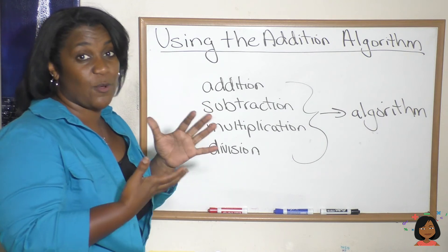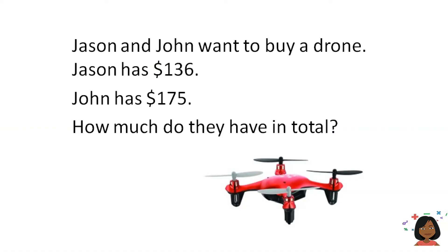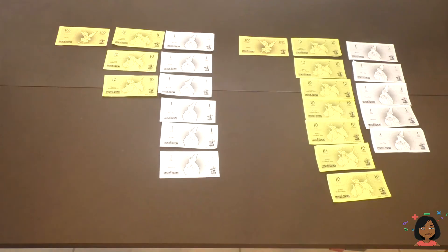Okay, take a look at this problem. Jason and John want to buy a drone. Jason has $136, John has $175. How much do they have in total? Let's actually use some money manipulatives to see what this looks like. We can see that Jason has $136. We also can see that John has $176.